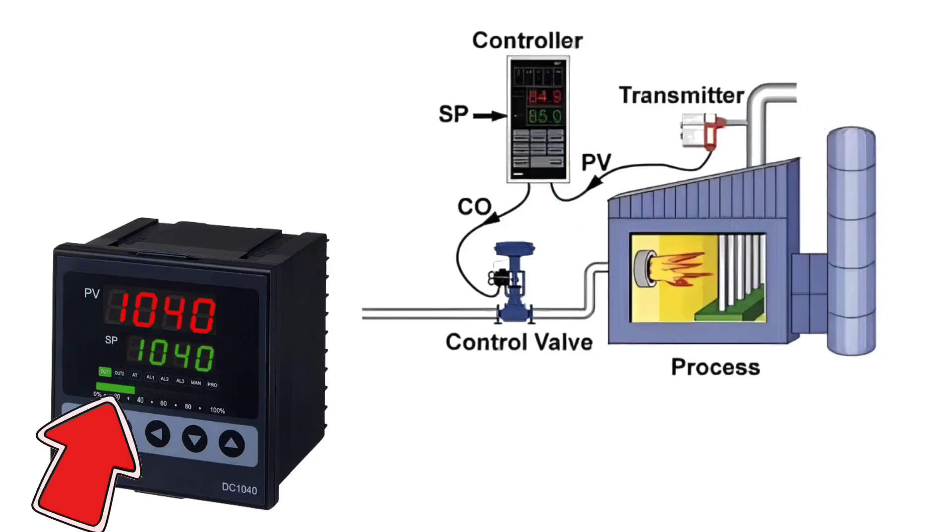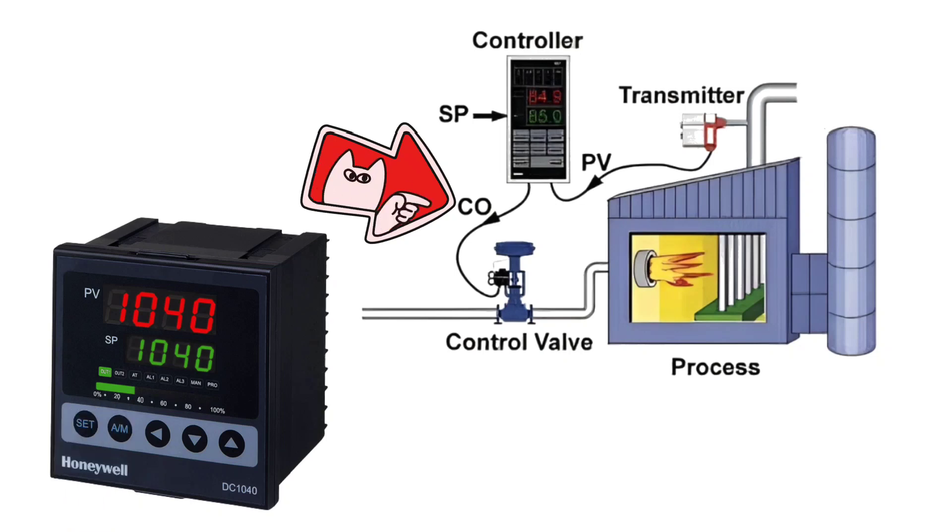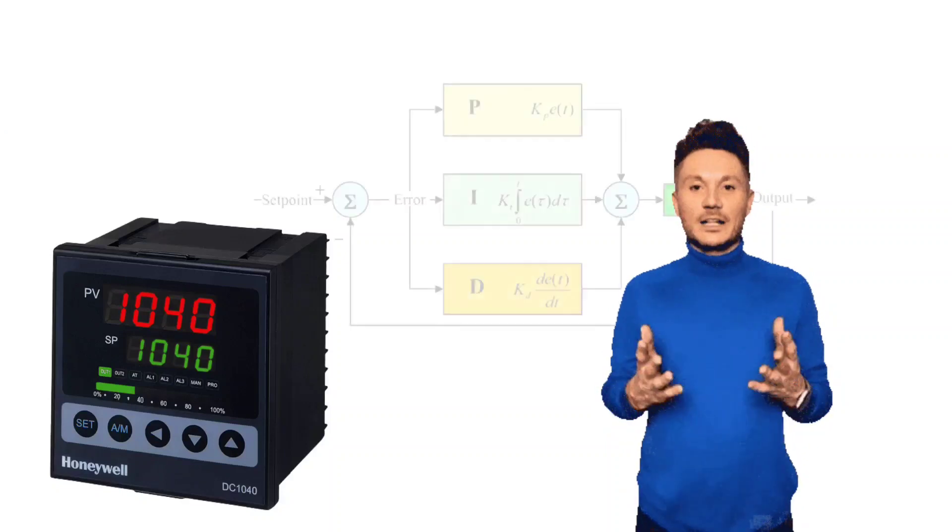Now, according to the set point, the output is sent to control valve and processes are maintained and controlled. Output signal of PID controller depends on its values.